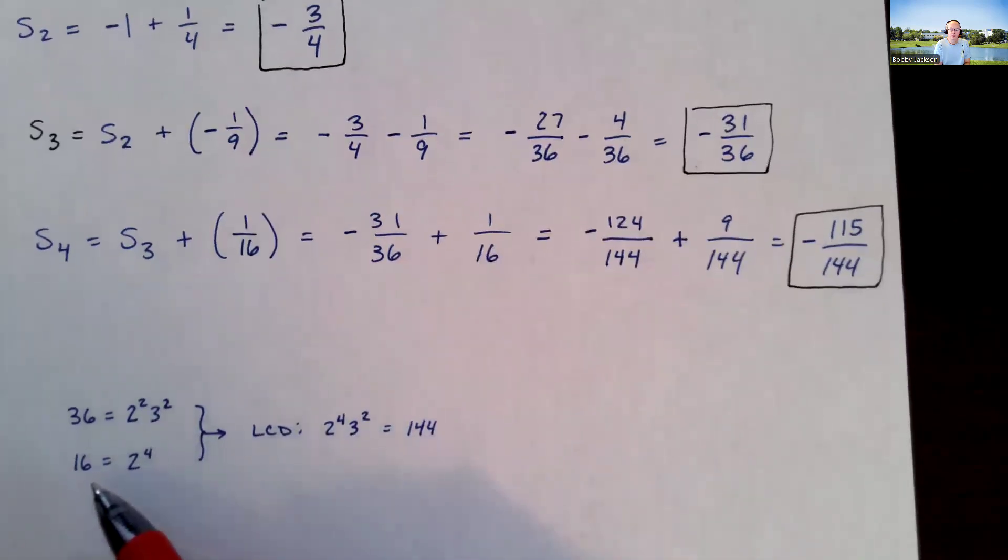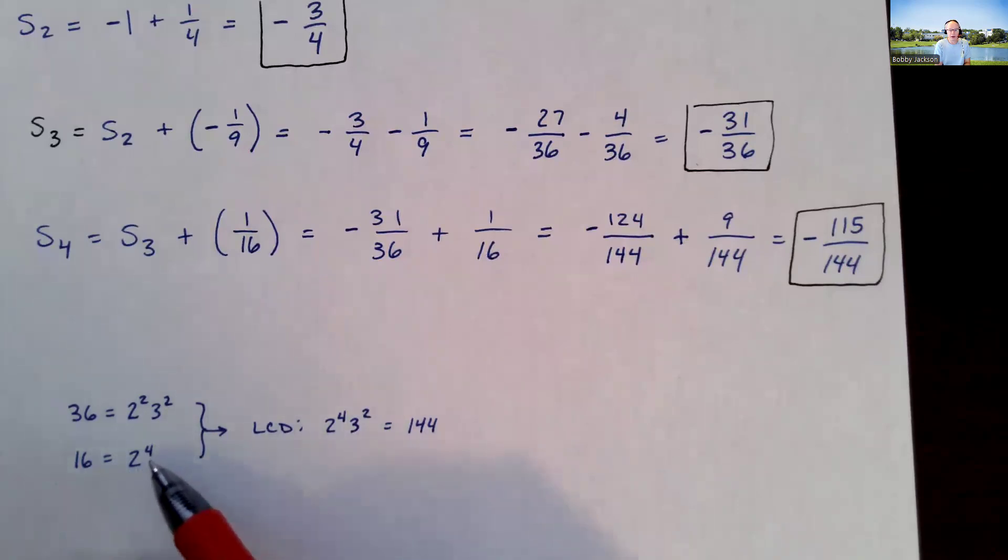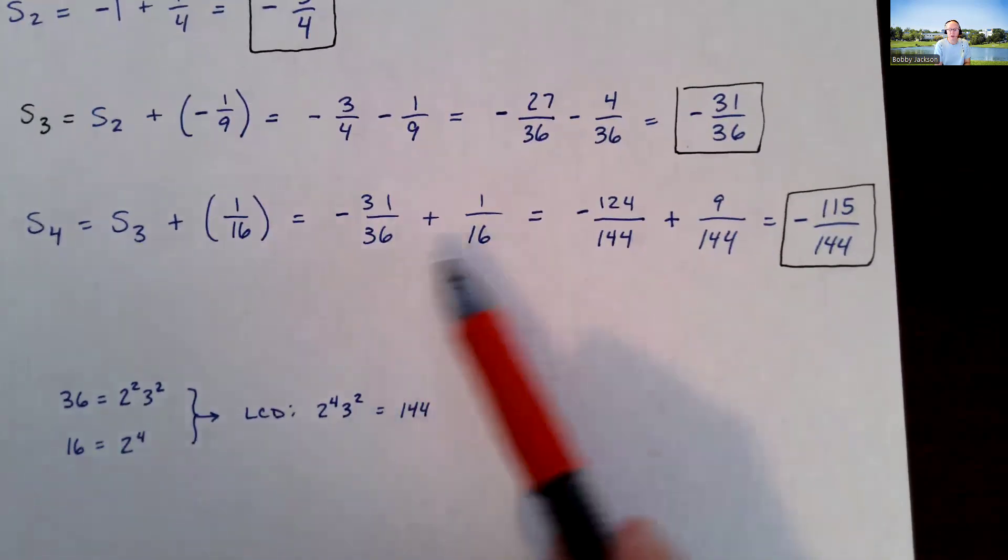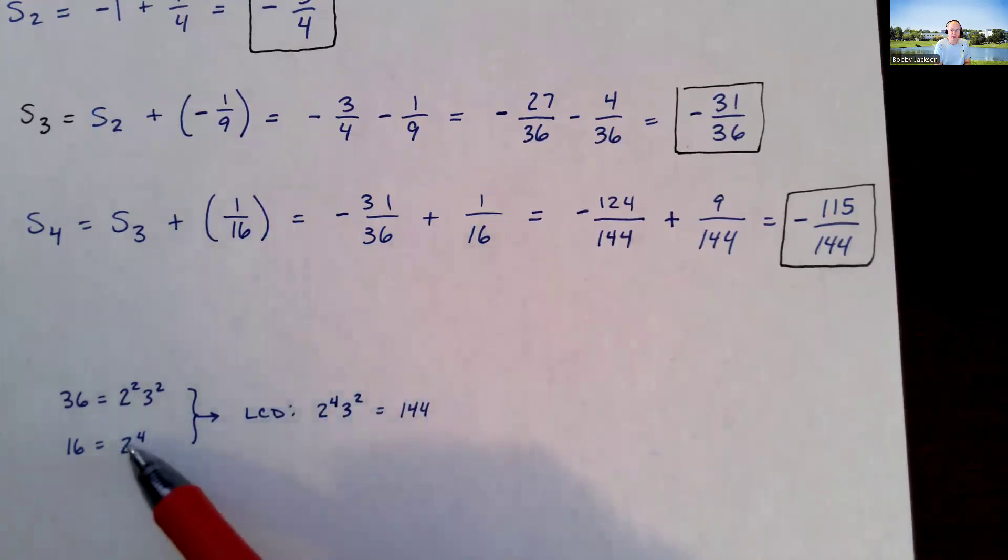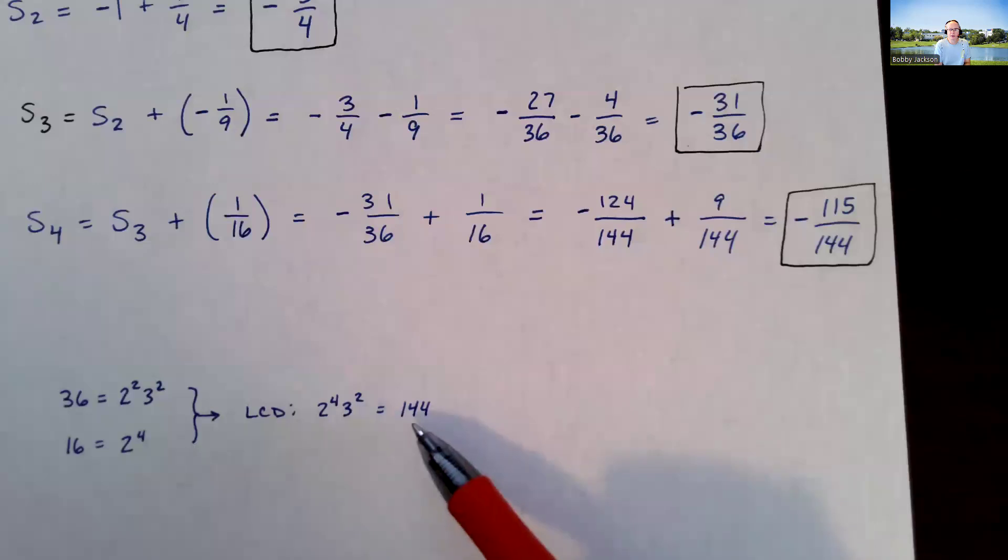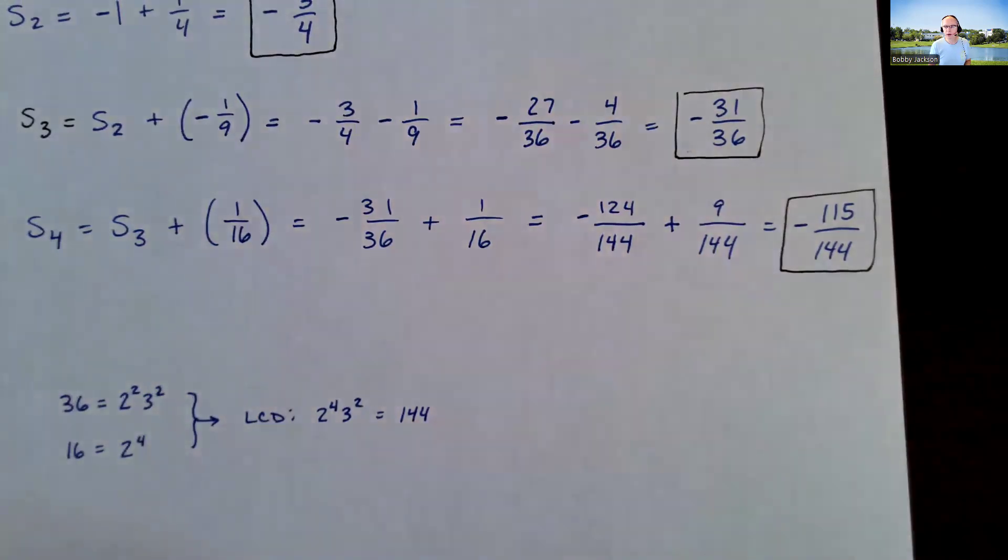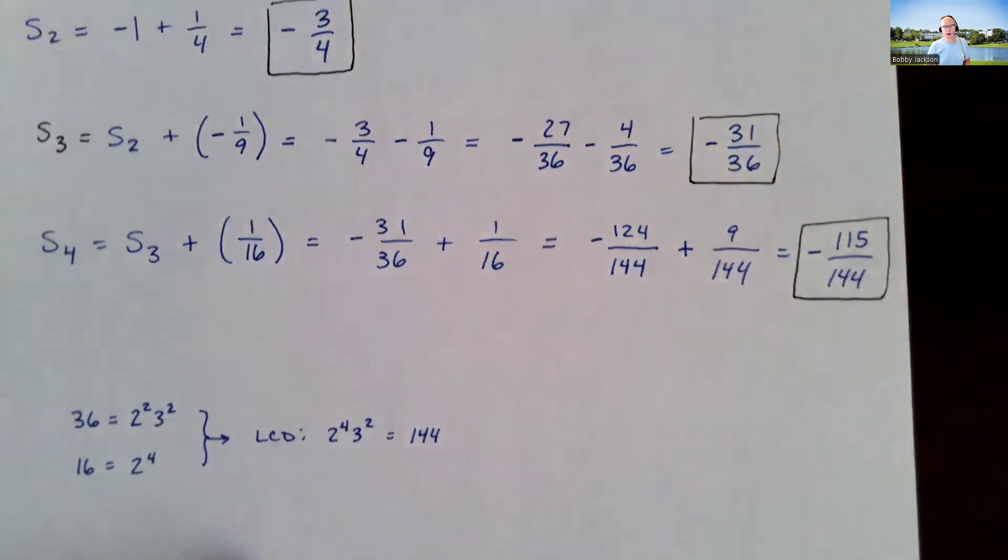When you're finding the least common denominator of these two, it's also called the least common multiple. You simply grab any factor that occurs in either expression. If it occurs in both, you take the higher exponent. So 2 squared, 2 to the fourth, I'm going to grab 2 to the fourth. 3 squared, I'm going to grab that. And 16 times 9 is 144. That's actually the least common denominator. We get this as our final result for s sub 4.